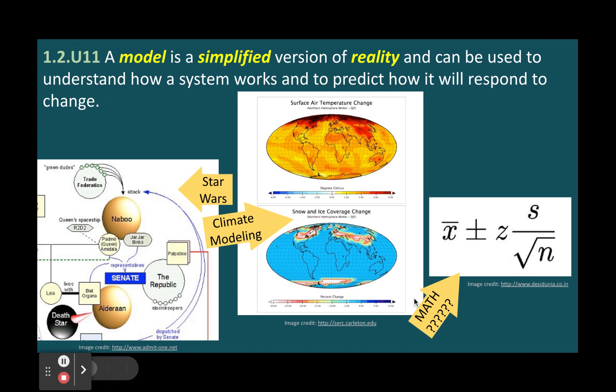A model is a simplified version of reality and can be used to understand how a system works and to predict how it will respond to change. A model can be physical such as a scale model of a building or a globe, mathematical such as an equation or a graph, conceptual such as a diagram or a flow chart, or computer-based such as a simulation or an animation.